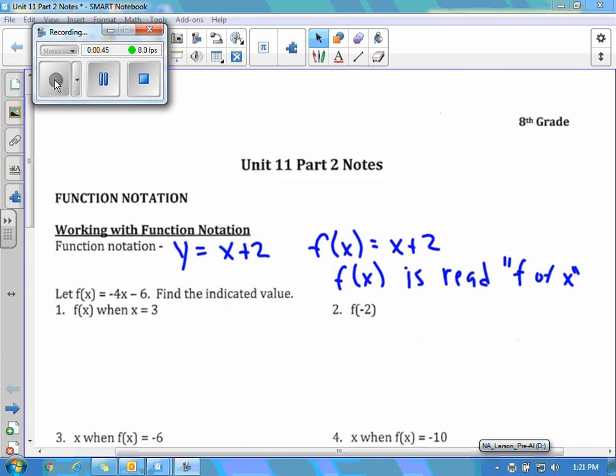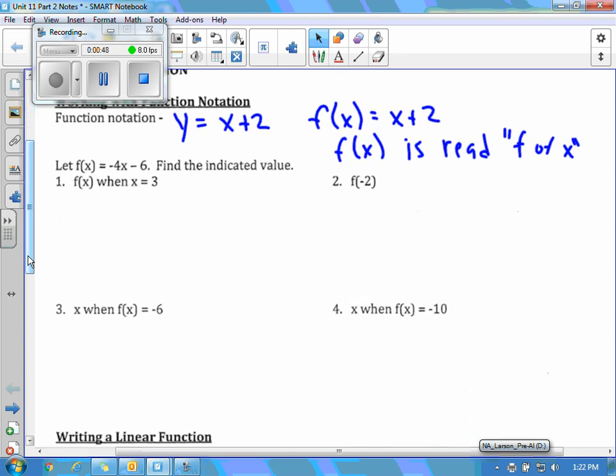So the first thing we're going to do is look at solving and plugging in to solve when we have something written in function notation. So it says let f of x equal negative 4x minus 6 and then find the indicated value. So the first one says to find f of x when x equals 3. So this is very similar to when we would plug in values or solve equations given certain values like we've done in the past. So all we're going to do is take the original...